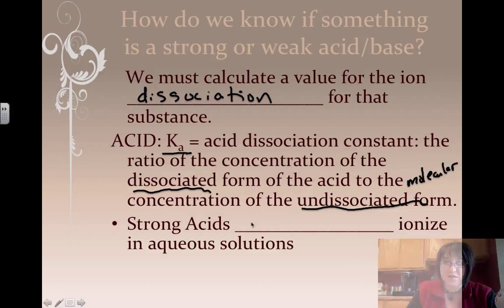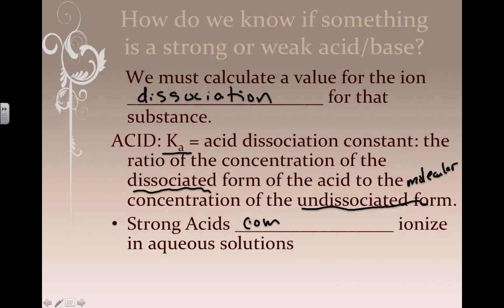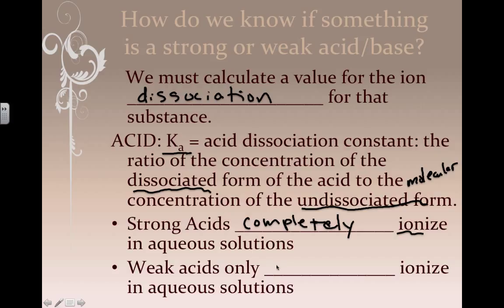Strong acids will completely ionize in solution. So they're called strong acids just as they would have been called strong electrolytes because they make the most ions in aqueous solutions. Weak acids will only partially ionize in aqueous solutions, and the stronger the bond is for the hydrogen and its anion, the weaker the acid tends to be.